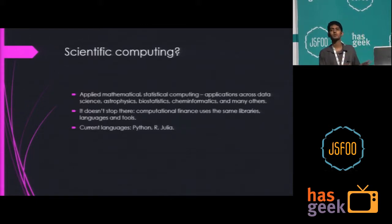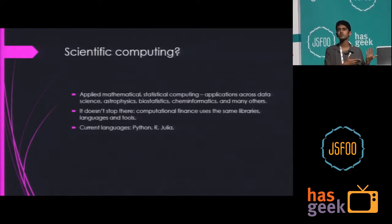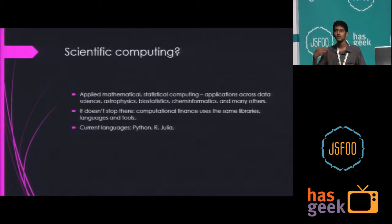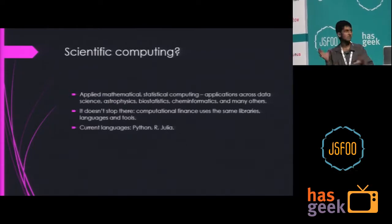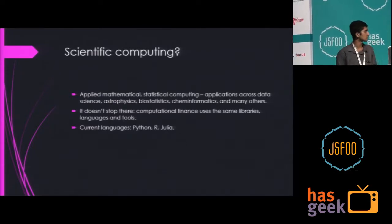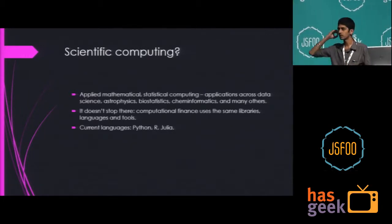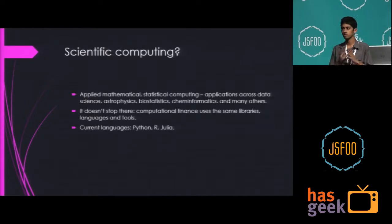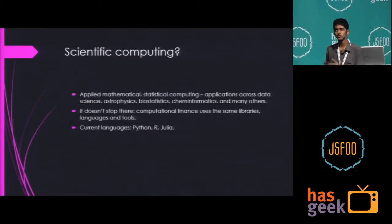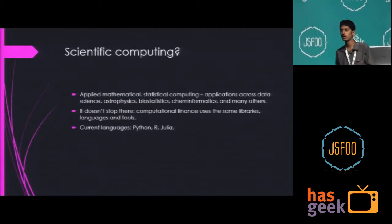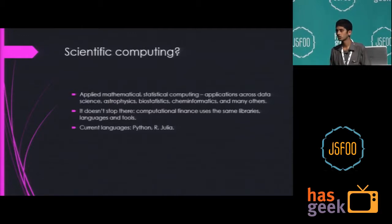It doesn't stop there. Computational finance, the stock market, VC fund valuations — that's all econometrics. What are the current languages used? Python — that's the first thing that jumps to mind. R, a great language for statistical computing. And Julia, which is relatively new, from a couple of MIT folks — and it's a great language too.